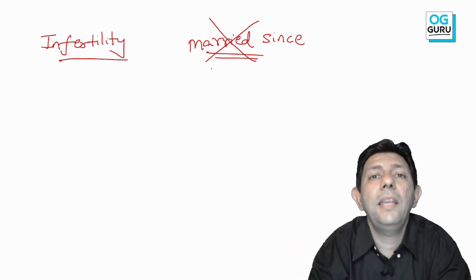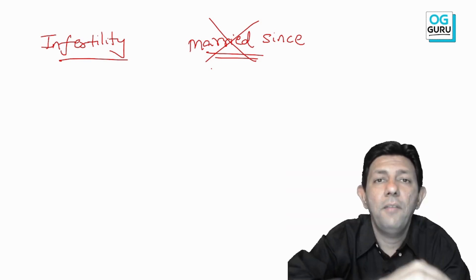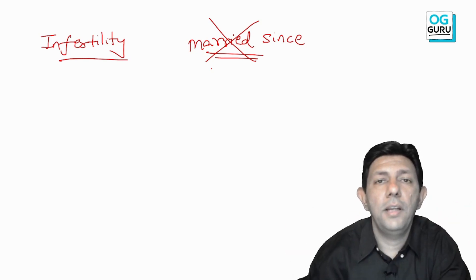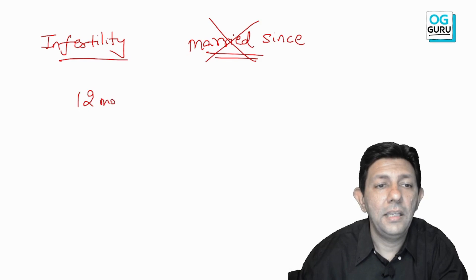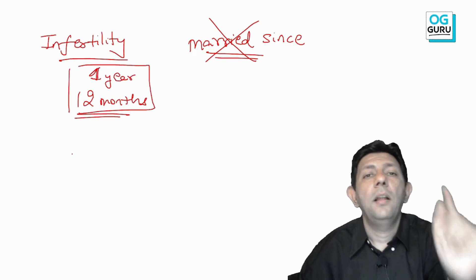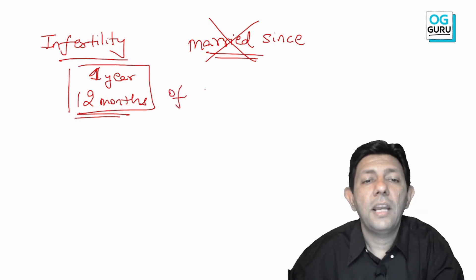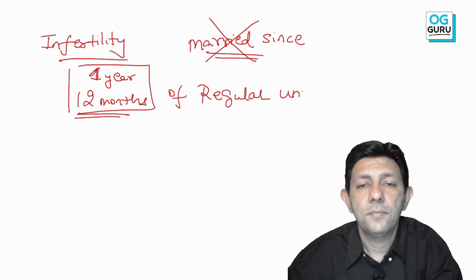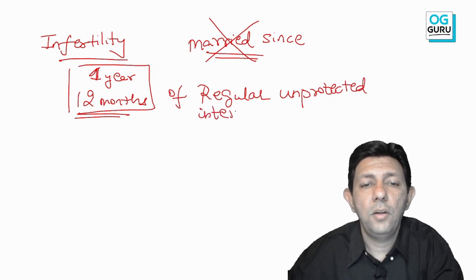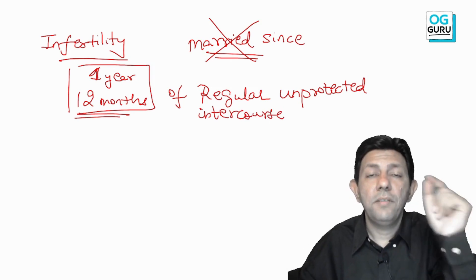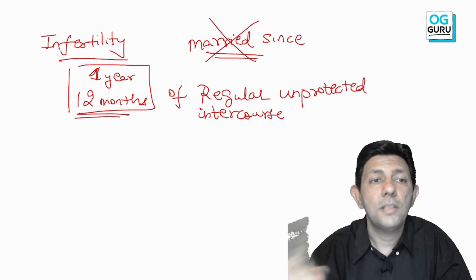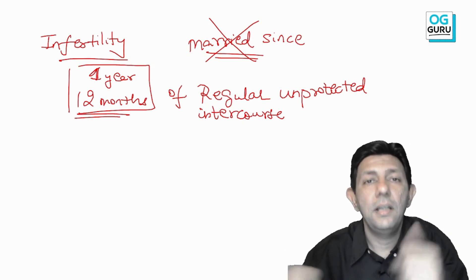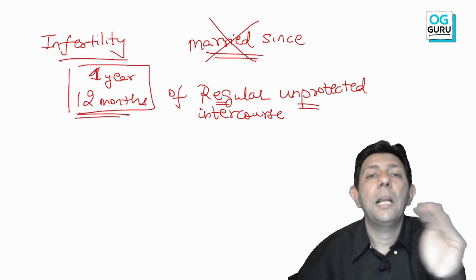A couple may be married for two, three, or four years but were not planning for a baby, or were living in different parts of the country. So the correct definition is: infertility is not able to conceive after one year of regular unprotected intercourse. Both words are important — it should be regular, and it should be unprotected, meaning neither partner is using any birth control.